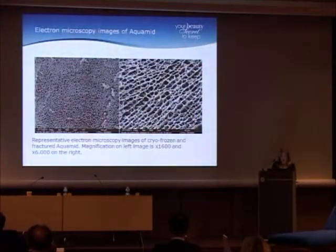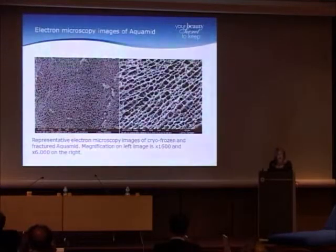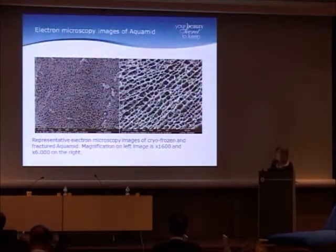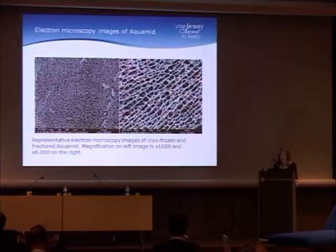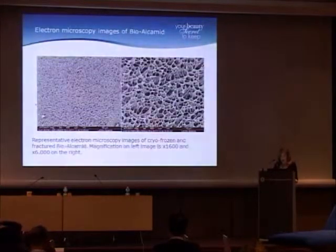This is Aquamid — a cryofrozen, fractured Aquamid — and you can see that the pore structure is pretty regular. On your right, it's at higher magnification. It's pretty regular, and the pores aren't that small, so it allows ingrowth of the fibrous tissue.